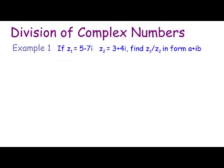Welcome to Maths with Bob. Today we're looking at the division of complex numbers. You can see here we have Example 1: z₁ is 5 minus 7i and z₂ is 3 plus 4i. We have to find z₁ divided by z₂ in the form a plus ib.